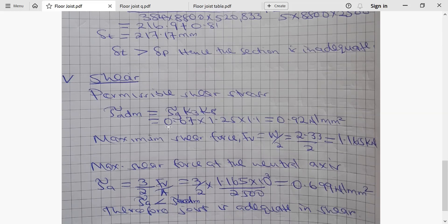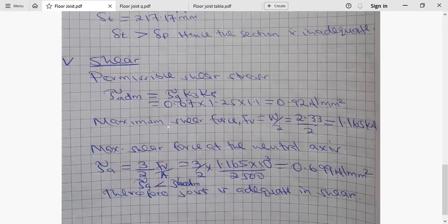Maximum shear force at the neutral axis is normally given by 3 over 2 maximum shear force divided by area. We convert maximum shear force from kilonewton to newton by multiplying by 10 power 3. You'll find it is 0.699 newton per millimeter squared. It means the applied is less than the permissible. In this regard, it means our section is able to withstand applied shear force. Therefore, joist is adequate in shear.